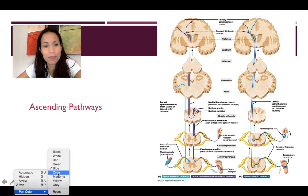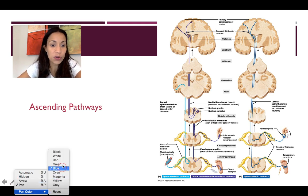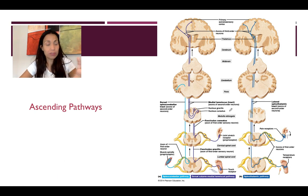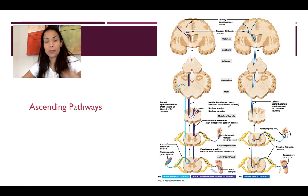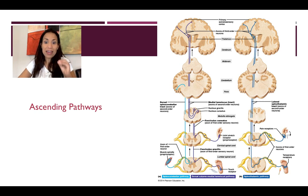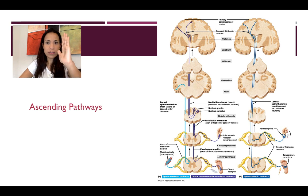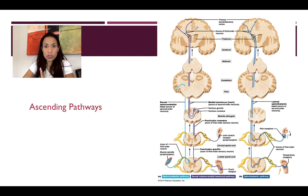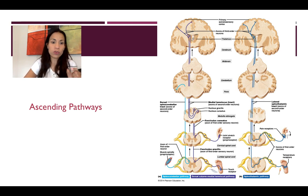There are actually thousands of pathways. But we're going to describe in general the ascending fibers, or ascending pathways, that bring sensory information from a receptor to the central nervous system. In the next slide, we're going to describe the ascending pathways.